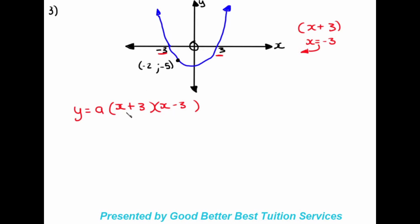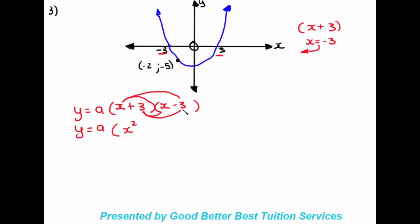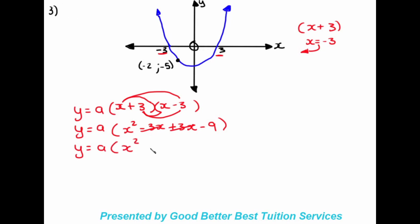We times out the two brackets: x times x gives x squared, x times negative three gives negative three x, three times x gives positive three x, and three times negative three gives negative nine. The middle terms cancel out, so the equation becomes y equals a times x squared minus nine.